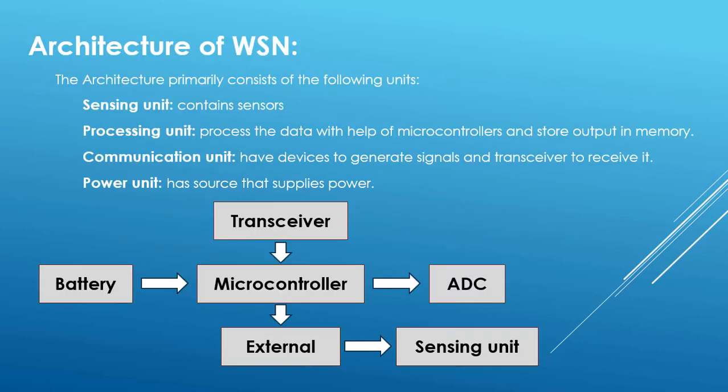The architecture of a wireless sensor network primarily consists of four units. First is the sensing unit, which contains the sensor. Second is the processing unit, which processes data with the help of a microcontroller and stores the output in memory. Third is the communication unit, which has devices to generate signals and a transceiver to receive them. Fourth is the power unit, basically a battery or any other source that supplies power.